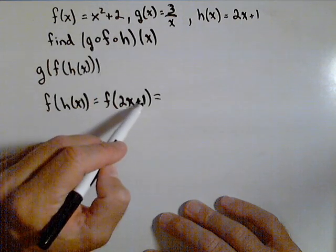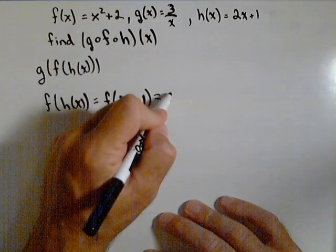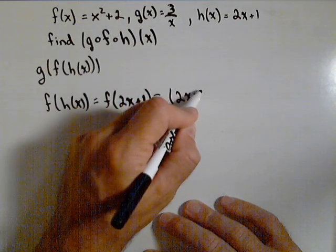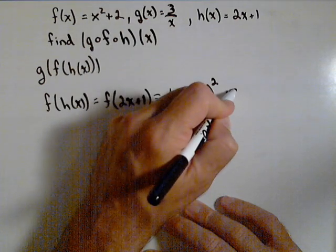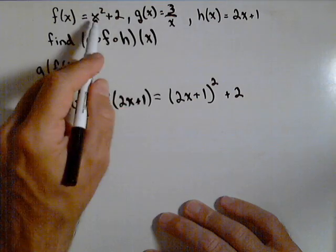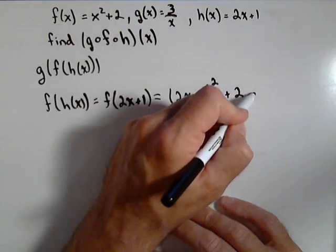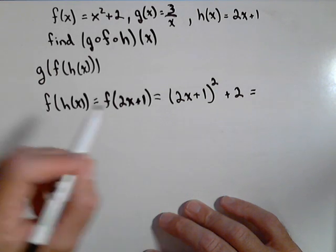So that gives us two x plus one quantity squared plus two. So we replace the x with two x plus one. Now remember, this needs to be foiled out.